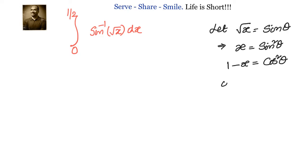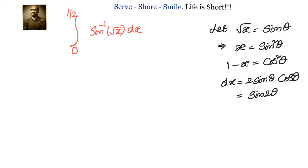Since x = sin²θ, we need to find dx in order to transform this integral from x to θ and remove the sin⁻¹ part. So dx = 2sinθ cosθ dθ, which we can also write as sin2θ dθ.